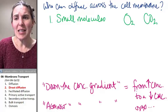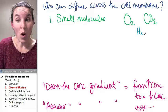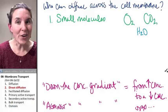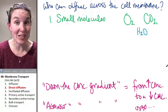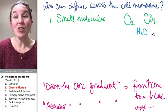Another example of a small molecule is water, and water can diffuse across the cell membrane, even though it is polar.